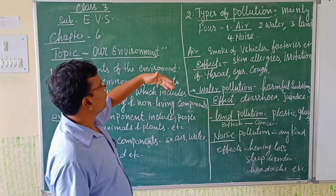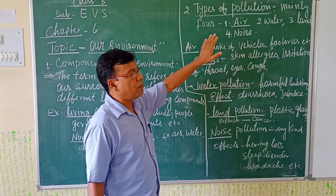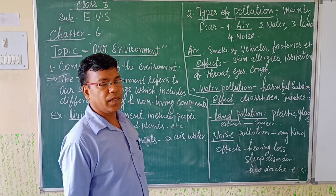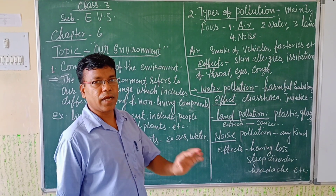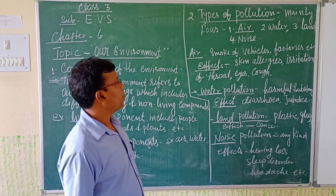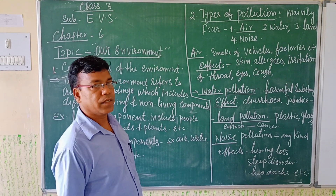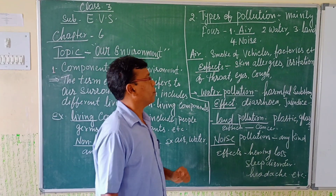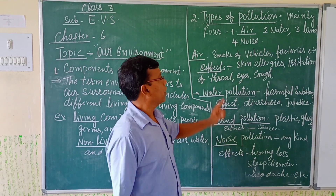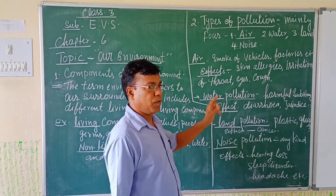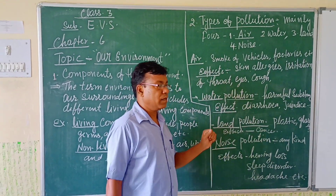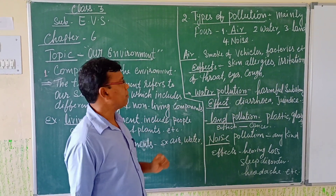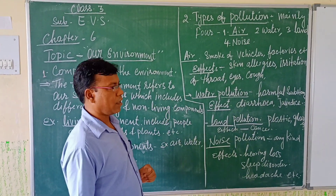Now we shall move to the next point: types of pollution. Mainly we see four types of pollution. First is air pollution, second is water pollution, third is land pollution, and fourth is noise pollution. Let us see one by one — first is air pollution.